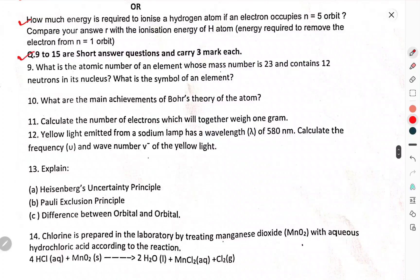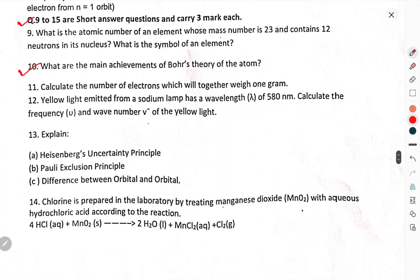Question number 9 to 15 are short answer questions, carrying 3 marks each. What is the atomic number of element whose mass number is 23 and contains 12 neutrons in its nucleus? What is the symbol of an element? What are the main achievements of Bohr's theory of atom? Calculate the number of electrons which will together weigh 1 gram.